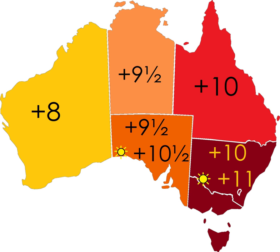The Yana Time Zone Database lists 13 zones for Australia as given by zone.tab. Columns marked with an asterisk are from the zone.tab.